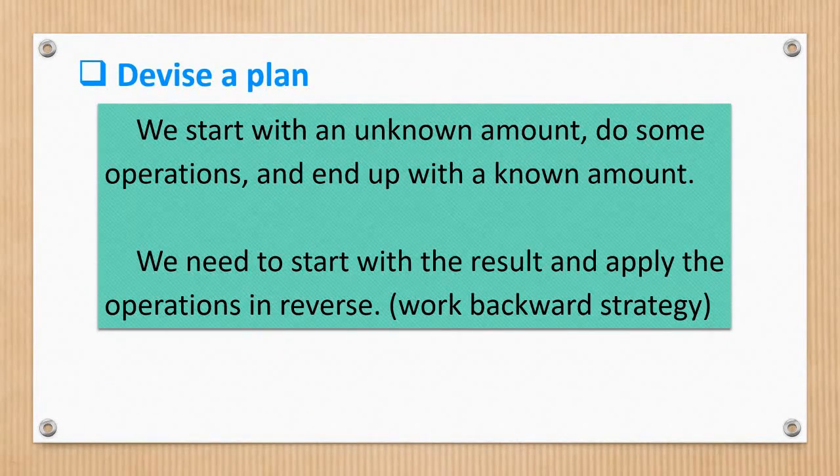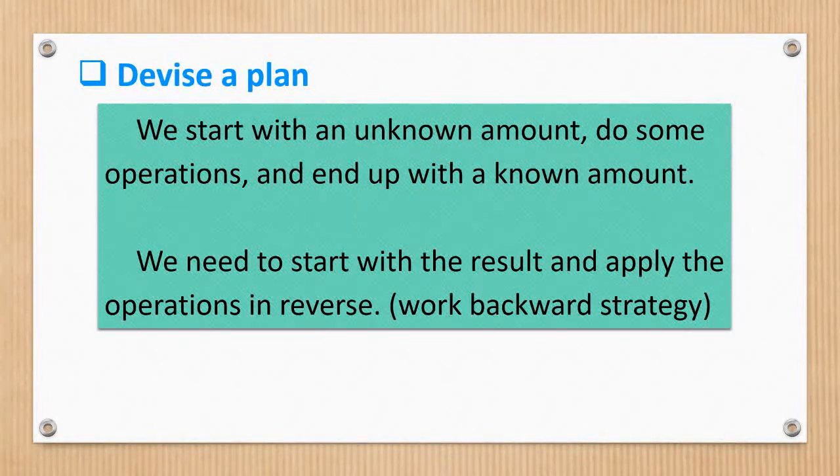So, we start with an unknown amount, do some operations, and end up with a known amount. We need to start with the result and apply the operations in reverse. Therefore, we're going to use the Working Backwards strategy because we are trying to find the unknown amount.